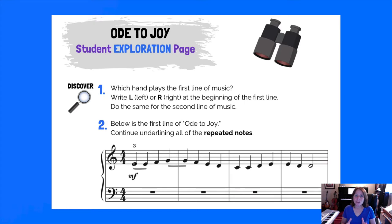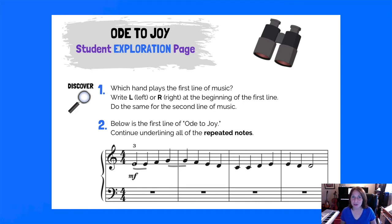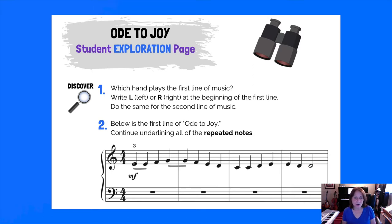This is the Discover part. The student is asked: which hand plays the first line of music? Write L or R for left or right. The student identifies which hand is playing each line of music — it's in a very obvious C major five-finger pattern at the early elementary level. Number two says: below is the first line of Ode to Joy — continue underlining all of the repeated notes. You can see I started with the E and E, then this moves over to the G, and notice that the G in the first measure repeats across the bar line.